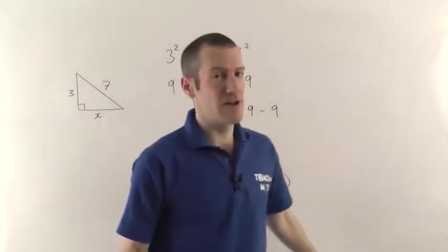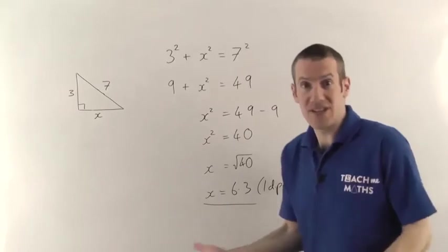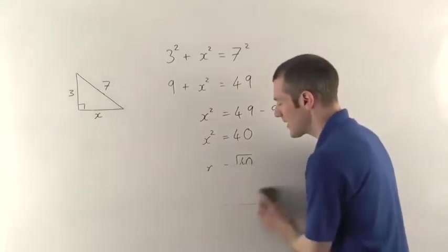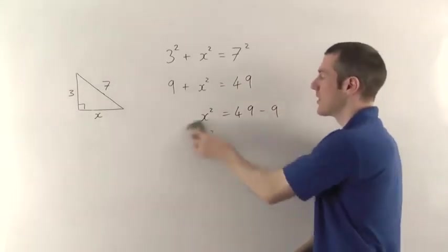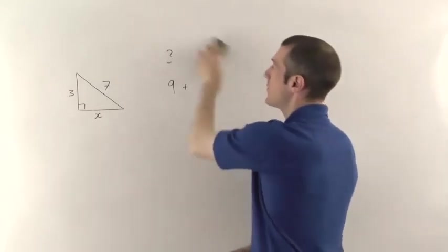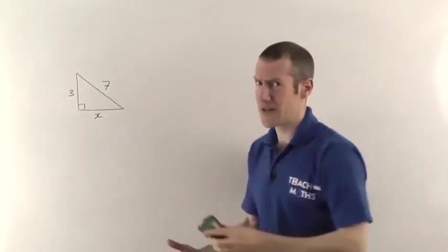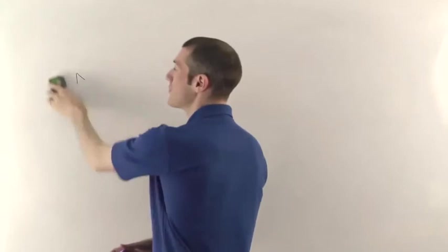But imagine they gave you a different kind of triangle where there wasn't even any right-angled triangle. Pythagoras' theorem only works for right-angled triangles. So if you don't have a right-angled triangle, but you're expected to use Pythagoras, you have to create one somehow. Let me show you what I mean.